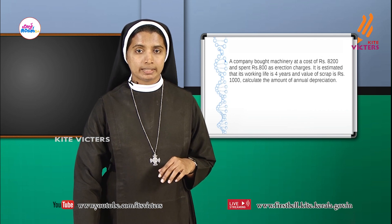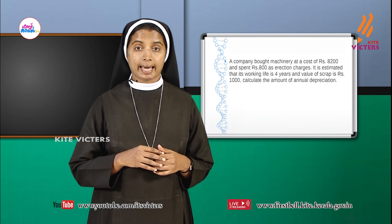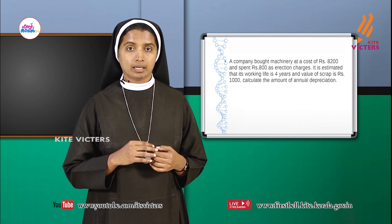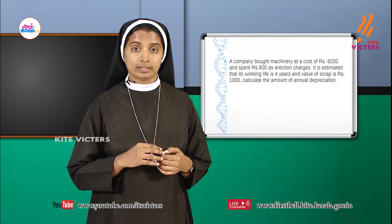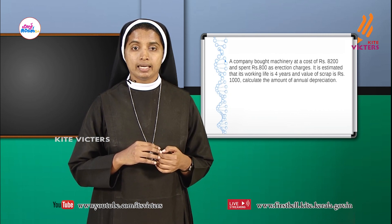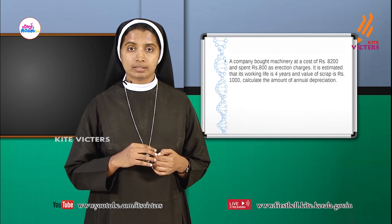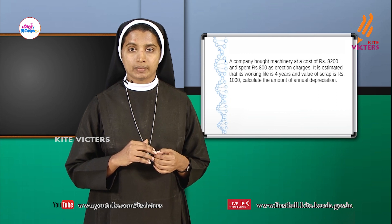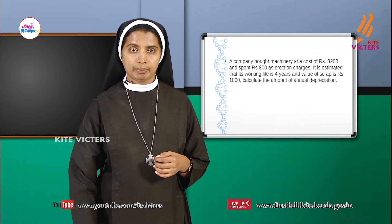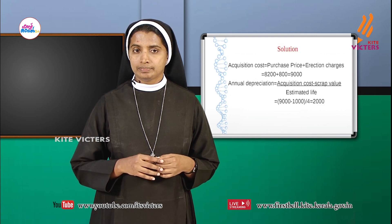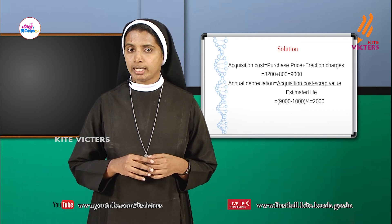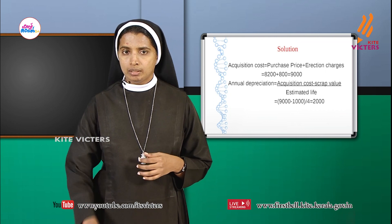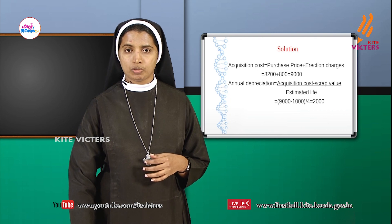One more problem. A company bought machinery at a cost of ₹8,200 and spent ₹800 as erection charges. It is estimated that its working life is 4 years and the scrap value is ₹1,000. Calculate the amount of annual depreciation. Before calculating depreciation, we have to find out the acquisition cost.